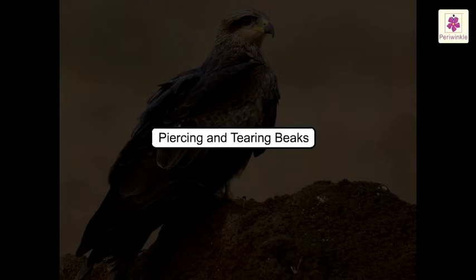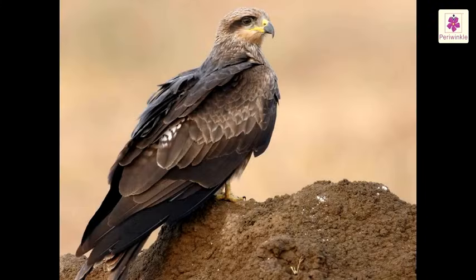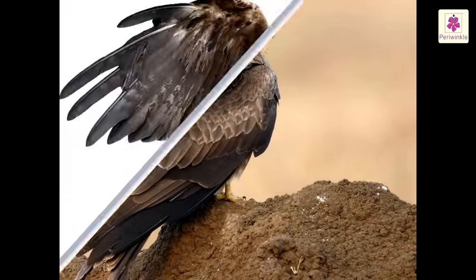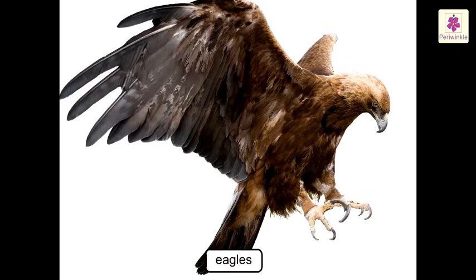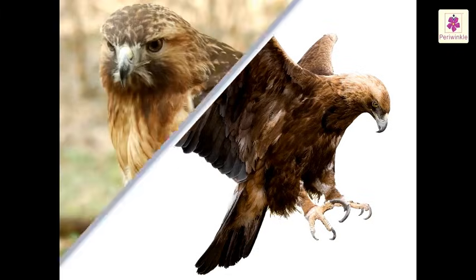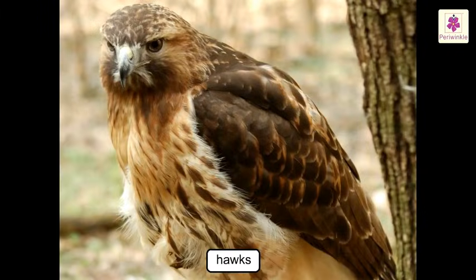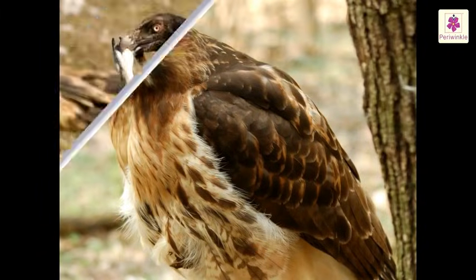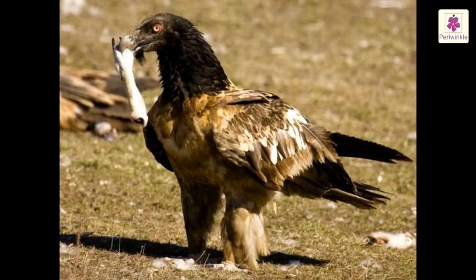Piercing and tearing beaks: flesh-eating birds like kites, eagles, and hawks have strong, sharp, and curved beaks for tearing flesh.